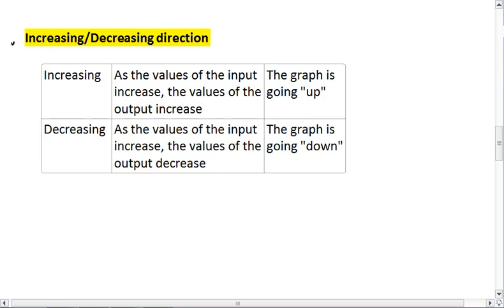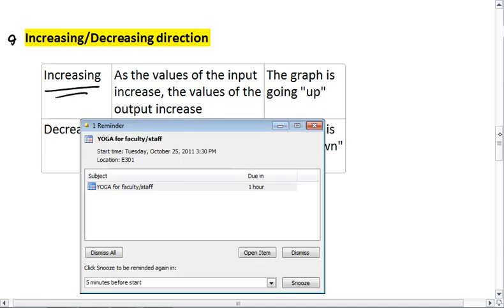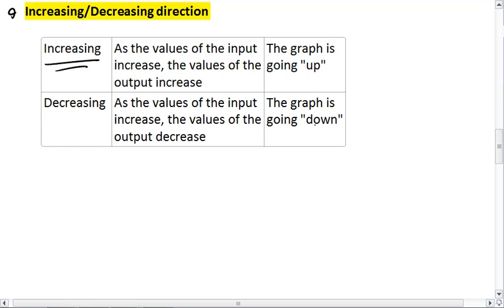The first is an increasing versus a decreasing direction. For an increasing direction, that means that as the values of the input increase, the values of the output are also increasing. Essentially the graph is going up.